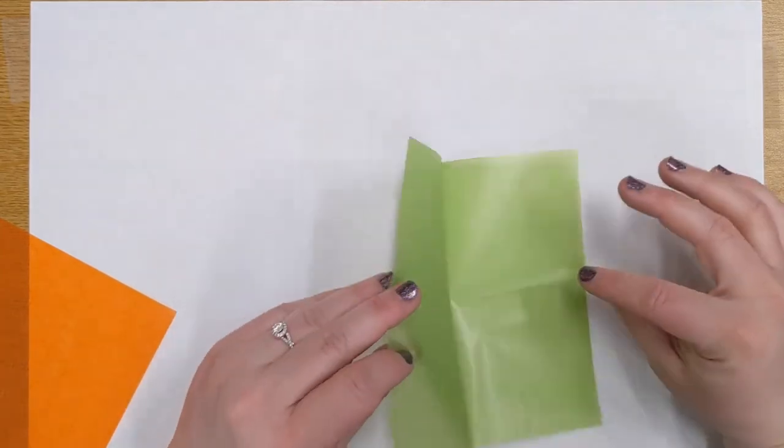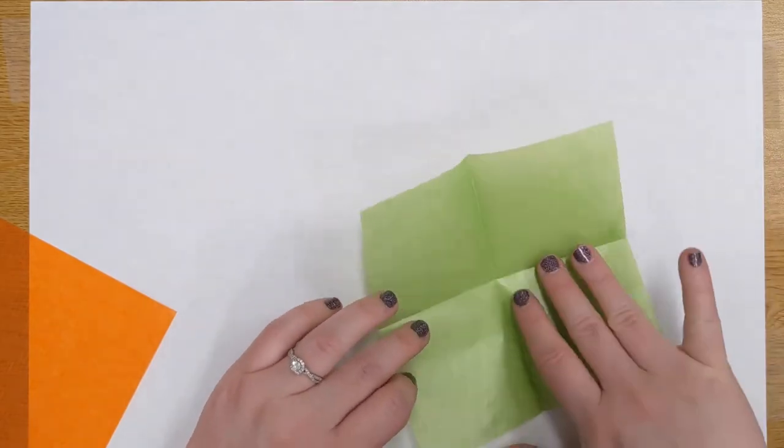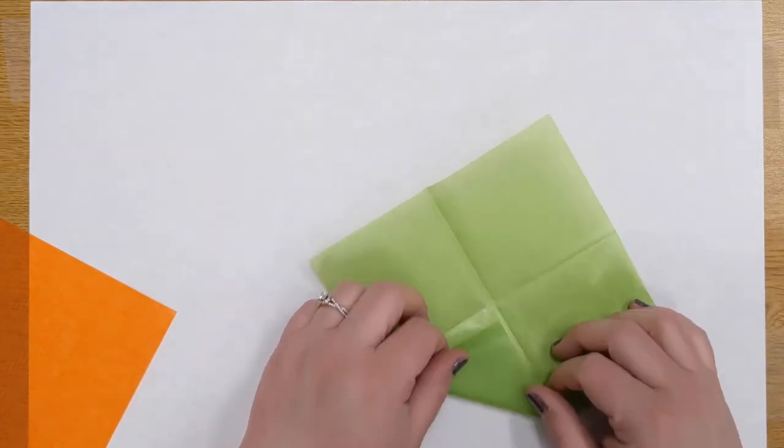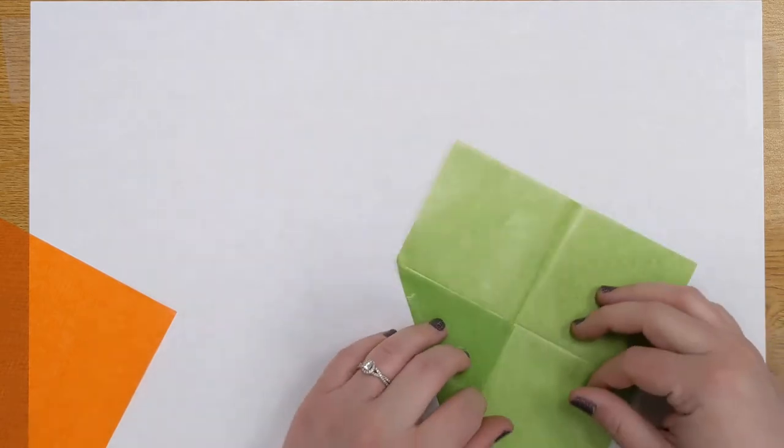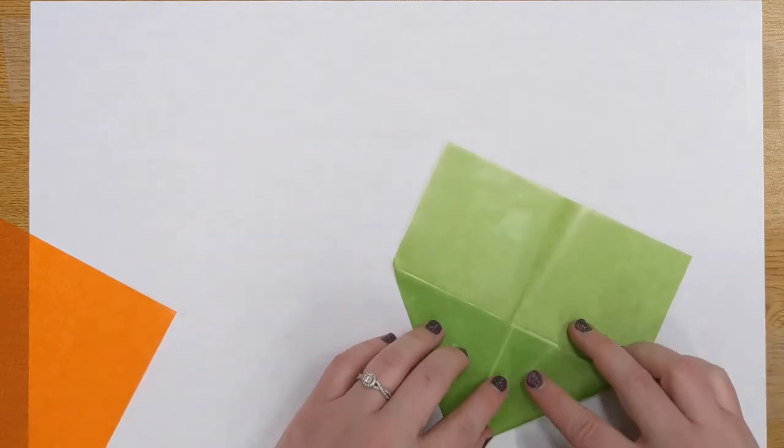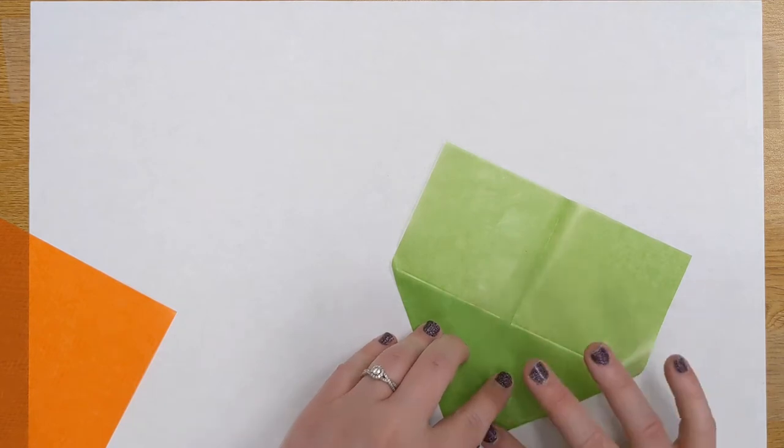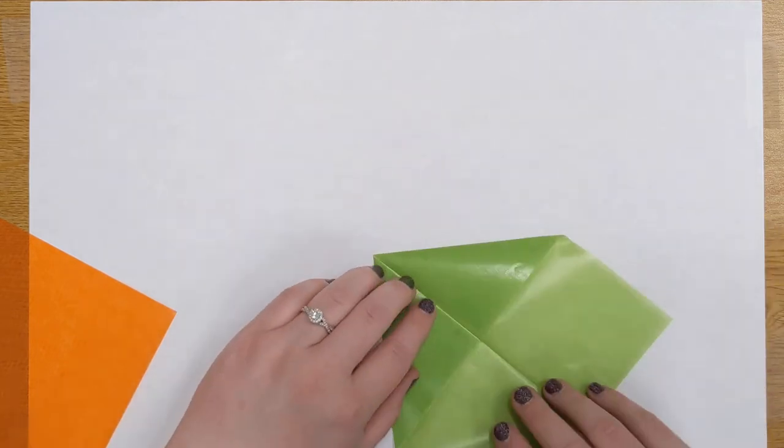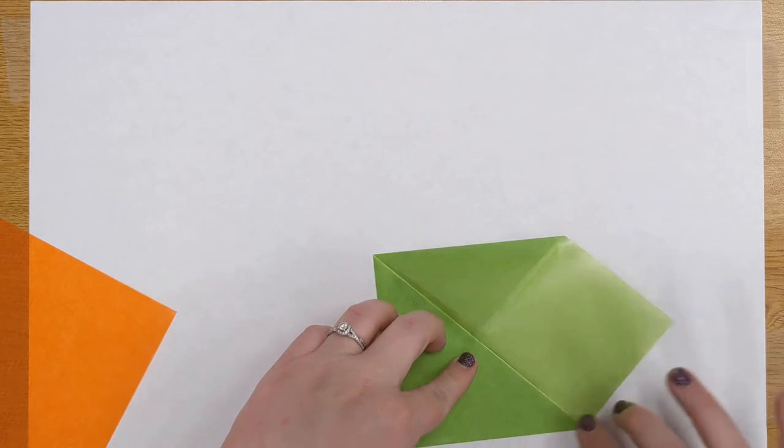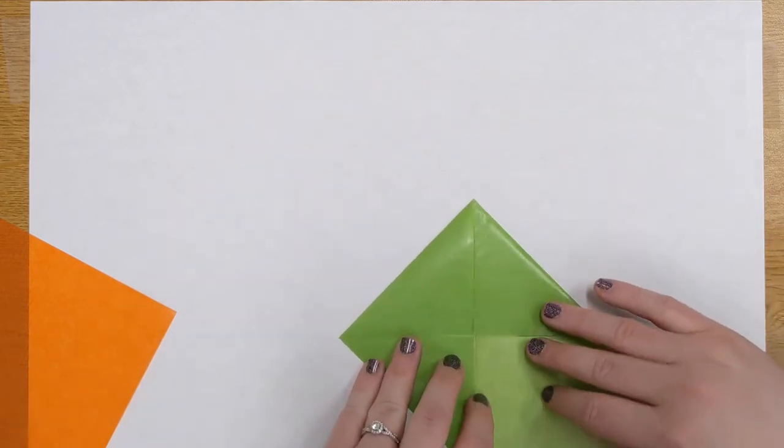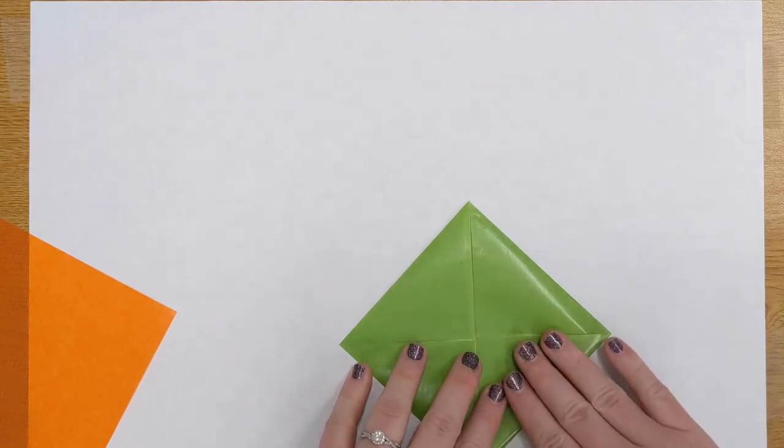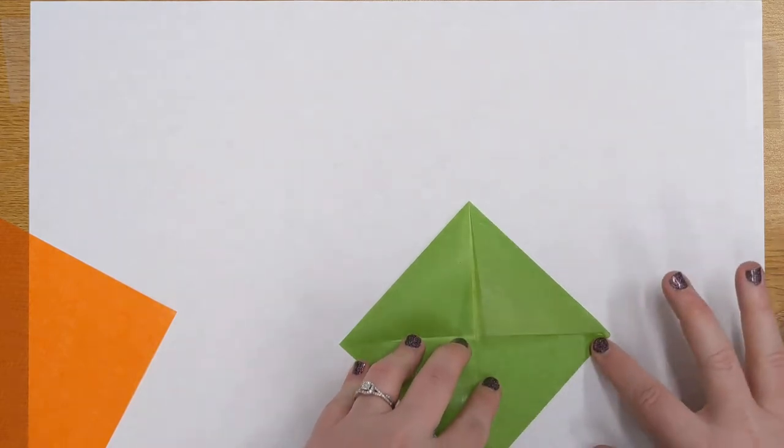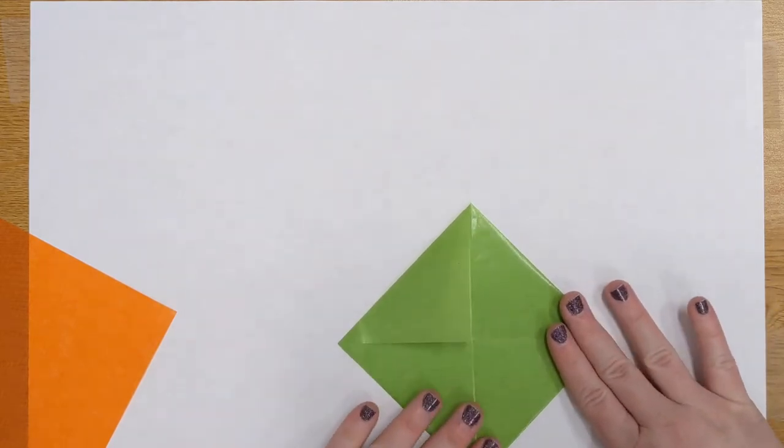And then we're going to take our paper, open it up again with the folded side up, and then fold in the triangles into the corners. This part reminds me of like a cootie catcher or fortune teller, whatever you want to call it. But we are going to be making a sun catcher and not a cootie catcher today. Once you have those folded in, doesn't have to be perfect.